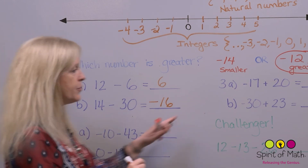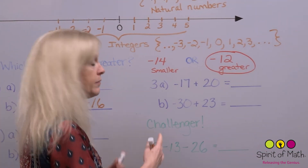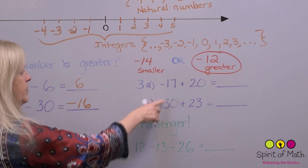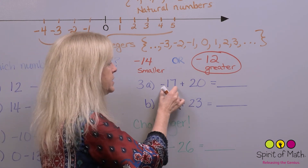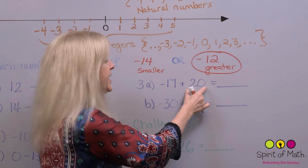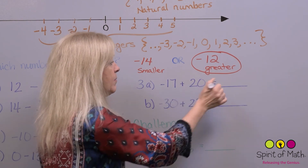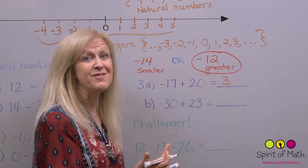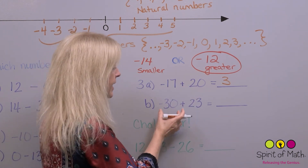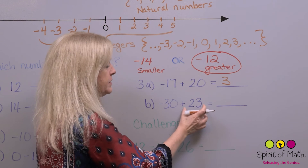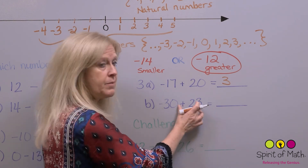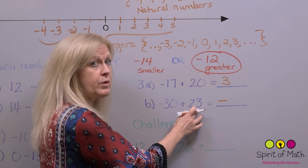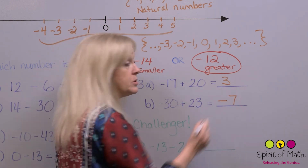Now for the next example: you've got 17 negatives and 20 positives. There are more positives than negatives — three more. From 17 to 20 is three, same as 20 minus 17. So the answer is positive three. And then: 30 negatives and 23 positives — there are more negatives than positives, so it's negative. How many more? From 23 to 30 is seven, so the answer is negative seven.